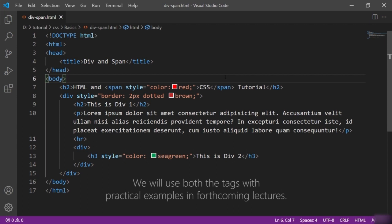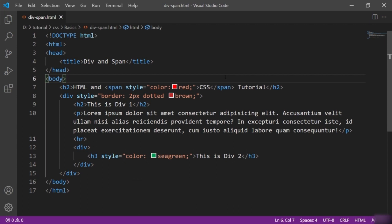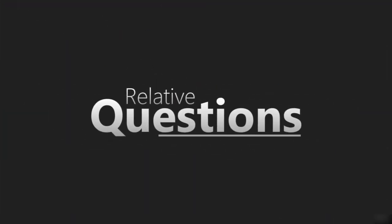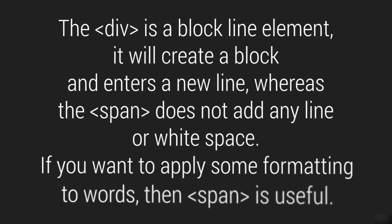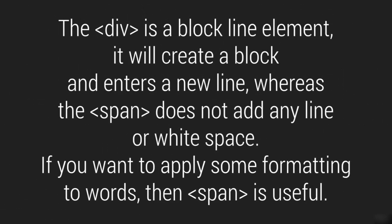We are going to use div and span often in forthcoming sections with practical designs. The question is: what is the difference between div and span? Div is a block-level element — it is going to create a block and enter a new line. Whereas the span tag doesn't add any line or white space. If you want to style or apply some formatting to specific words, then span is the tag you would be using.